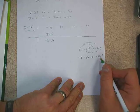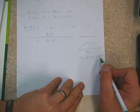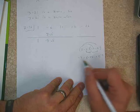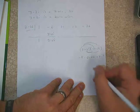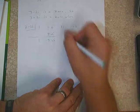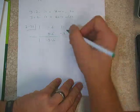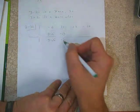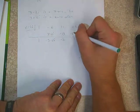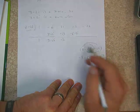We need to foil (3 minus 2i)(negative 3 minus 2i). That gives us: negative 9, minus 6i, plus 6i (which cancel), and then plus 4i squared. The 6i terms cancel. And since i squared equals negative 1, we get 4i squared equals negative 4. So this is really negative 9 minus 4, which equals negative 13.